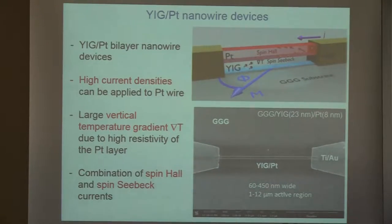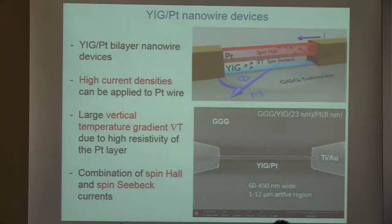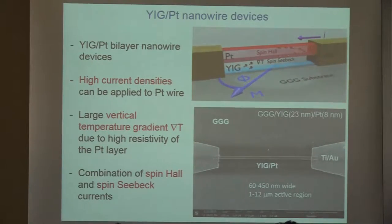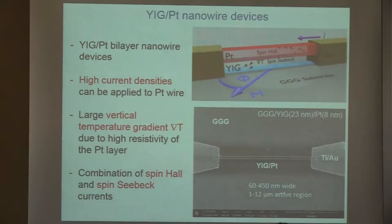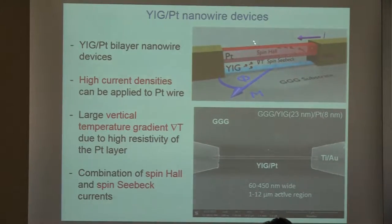These are the samples I'm going to talk about: nanowires made out of a platinum/YIG bilayer. The thickness of YIG is 23 nanometers. We pattern nanowires of various width and length and fabricate two leads that allow us to drive current through the platinum layer of the nanowire.